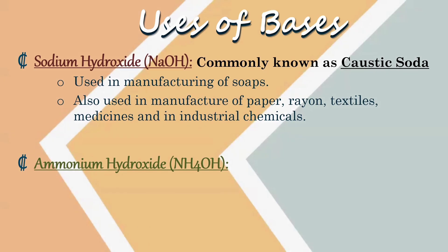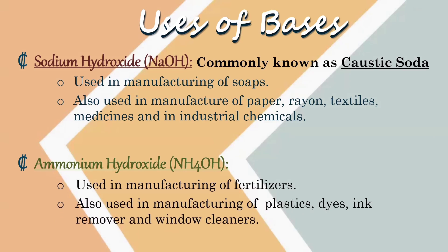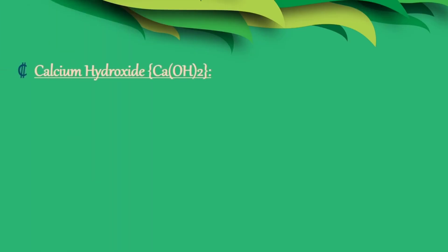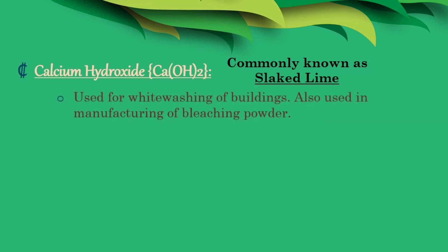Number two: ammonium hydroxide. Its chemical formula is NH4OH. Ammonium hydroxide is used in manufacturing of fertilizers. It is also used in manufacturing of plastics, dyes, ink, and window cleaners.